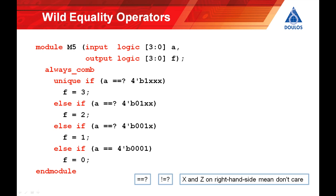You can see in this example that always comb and unique are used to state explicitly that we're describing combinational logic using an if statement in which one and only one condition matches each time round.